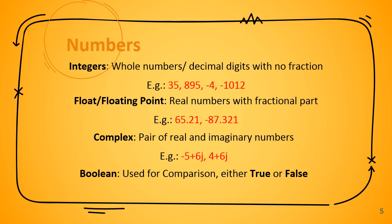First we will see the numeric data types. The numeric data type is used to store numeric values. It is further classified into four sections: integers, floating point, complex, and boolean.